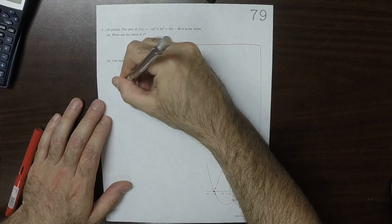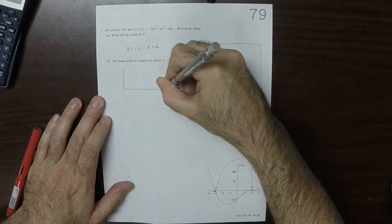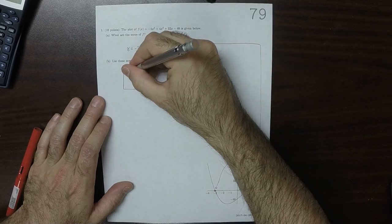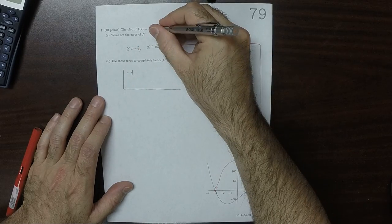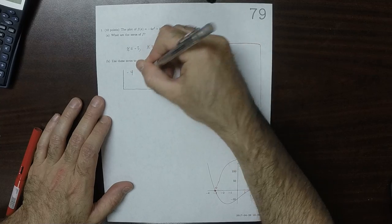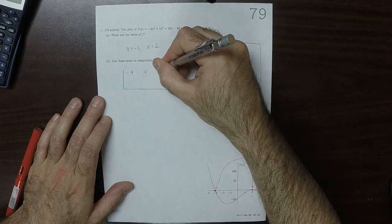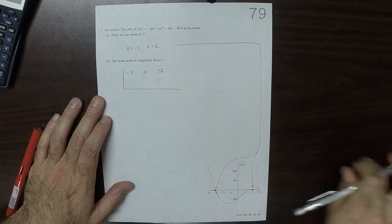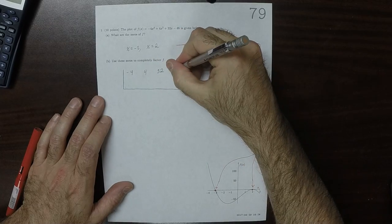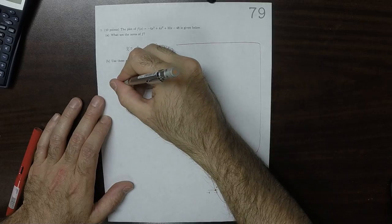I'll use the first zero. We have -4, +4, 32, -48, and then 2 is one of the zeros.